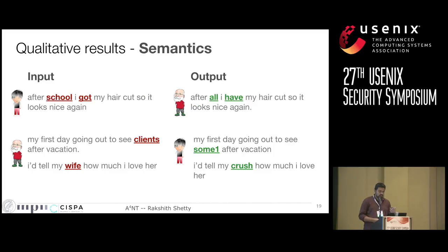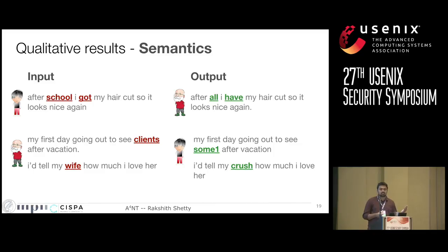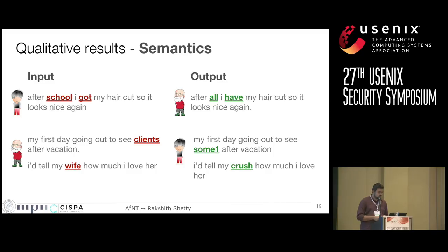A final class of changes are those that alter semantics — these are failure cases that usually happen in difficult examples where the input text semantics are heavily biased towards one class. For example, a sentence talking about going to school is very likely written by a teenager, while talking about seeing clients or a wife is very likely written by an adult. In these cases, the model learns to replace these words, which alters the semantics a little but protects privacy. For example, 'after school I got my hair cut' changes to 'after all I have my hair cut,' and 'I tell my wife how much I love her' changes to 'I tell my crush how much I love her.'